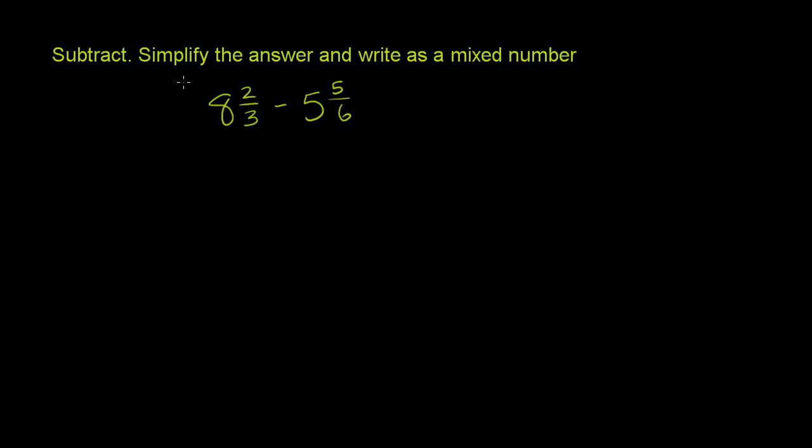They want us to subtract these two numbers and simplify the answer and write as a mixed number. We're going to do it two ways. The first way, we're going to turn both of these into improper fractions and see what we get. And then the other way, we're going to subtract the whole number parts and then subtract the fraction parts and see what we get.